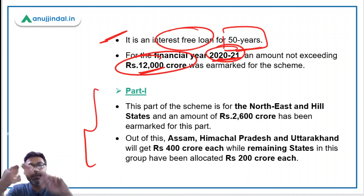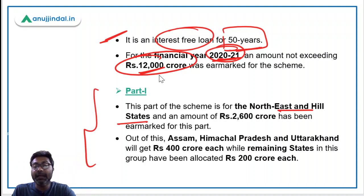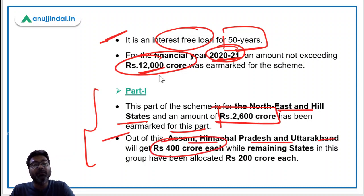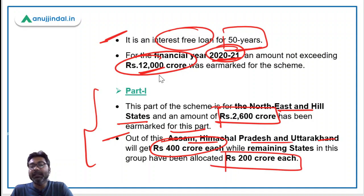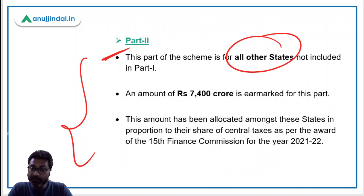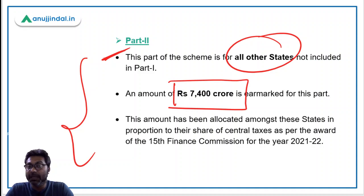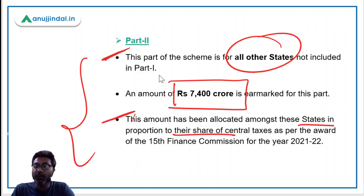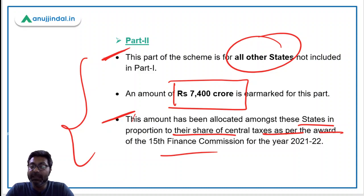This scheme has three parts. Part one is for the northeast and hilly states, for which rupees 2,600 crore has been allocated. Out of this, Assam, Himachal Pradesh and Uttarakhand will get rupees 400 crore each, while the remaining states will get rupees 200 crore each. Part two is for all other states not included in part one, and a total amount of rupees 7,400 crore has been allocated for them. This amount will be allocated among these states in proportion to their share of central taxes as per the award of the 15th Finance Commission.